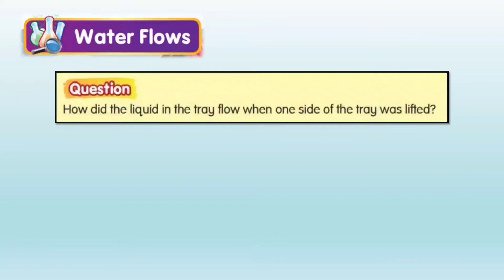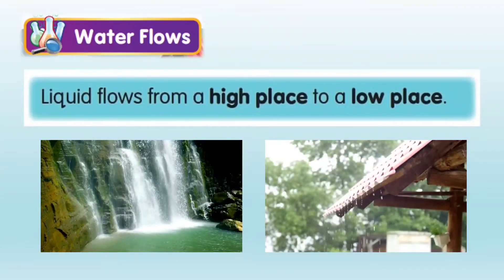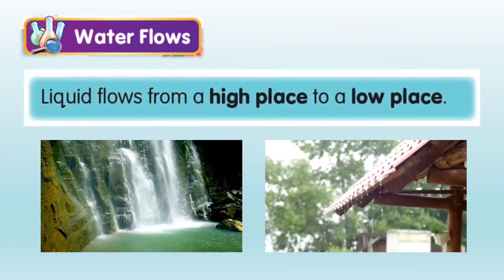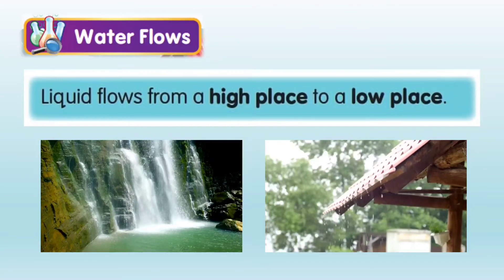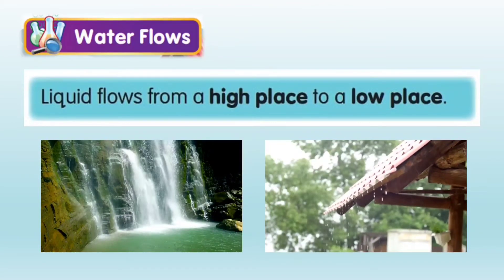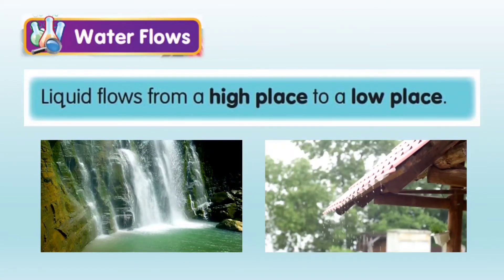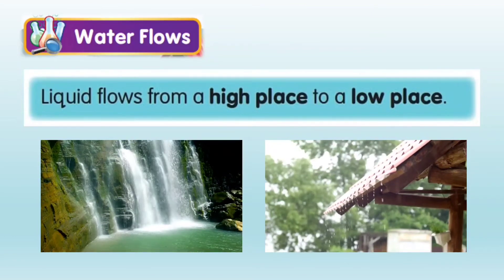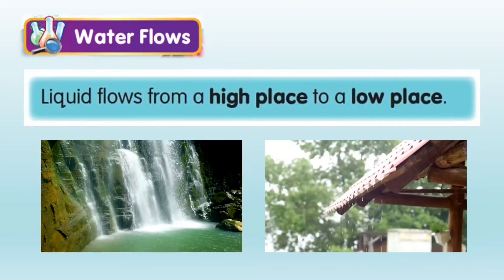Just like the waterfall, water falls from a high place to a lower place. And the rain from the rooftop flows from a high place to the ground, which is a lower place.